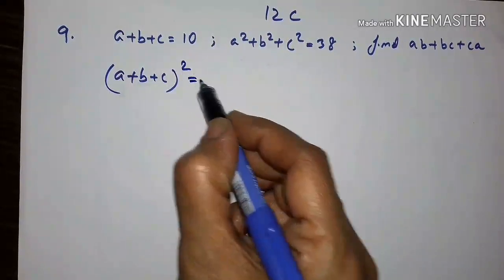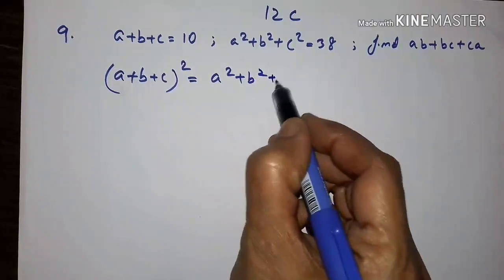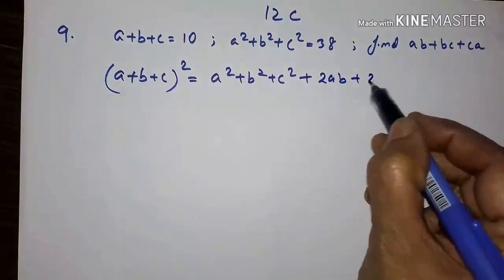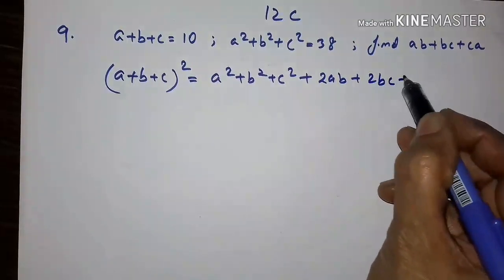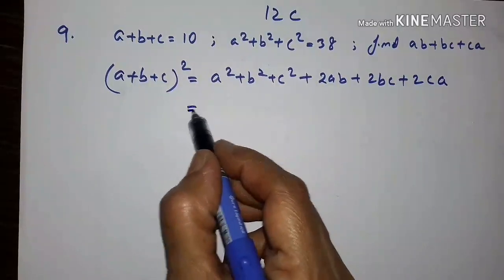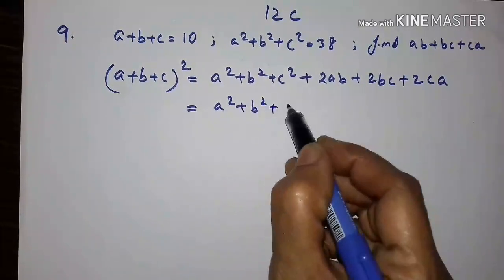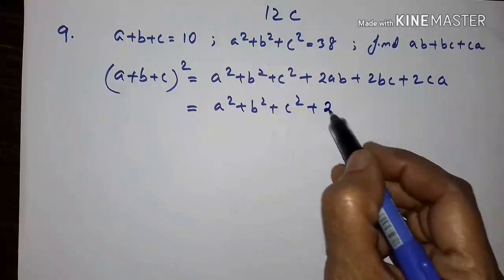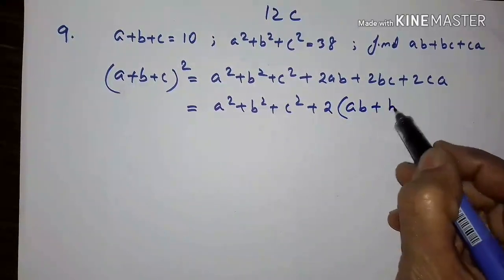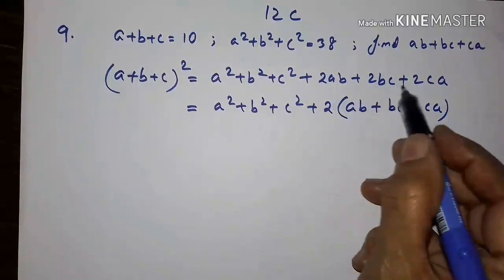The formula is: a plus b plus c, the whole square, is equal to a squared plus b squared plus c squared plus 2ab plus 2bc plus 2ca, which equals a squared plus b squared plus c squared plus 2 into (ab plus bc plus ca), taking 2 common.